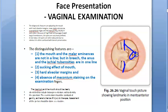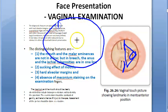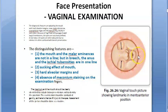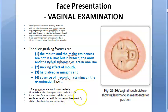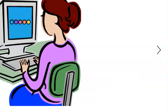If you can see that the malar eminences and the mouth, they are not in the same line - it's more like a triangle. In breech, the anus and the ischial tuberosities are in one line, but in face presentation the malar eminences and mouth are not in the same line. If you palpate, you will feel the sucking effect of the mouth and you can feel the hard alveolar margins because of the jaw. There will be absence of meconium staining on the examination finger when you remove it - because this is not the anus, it's the mouth.